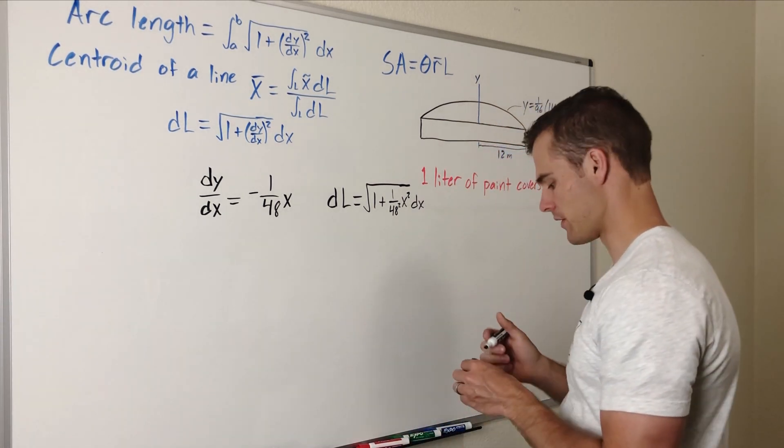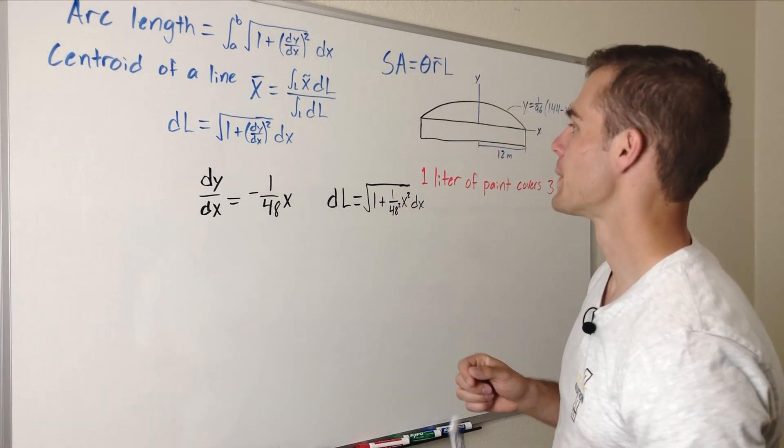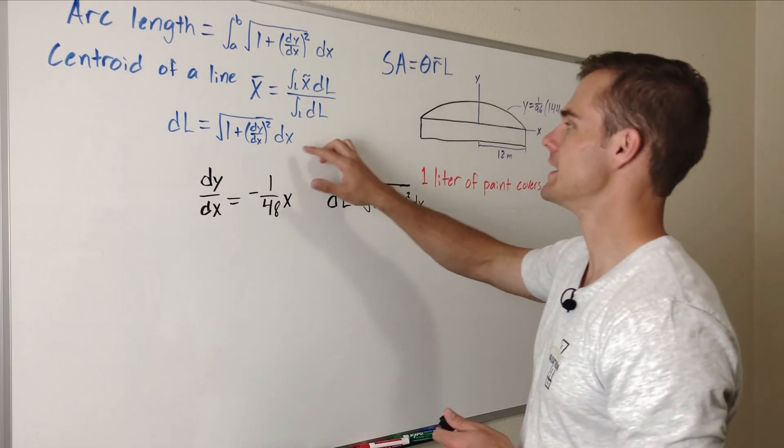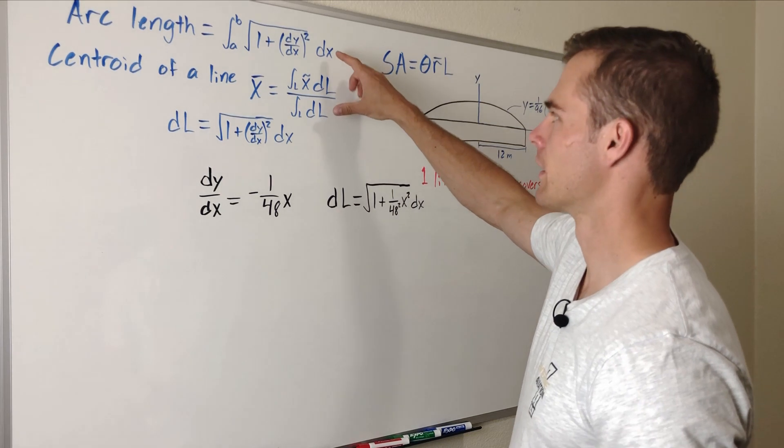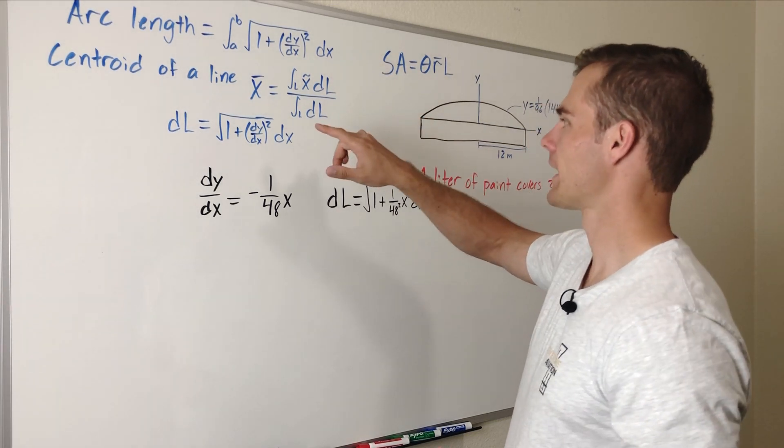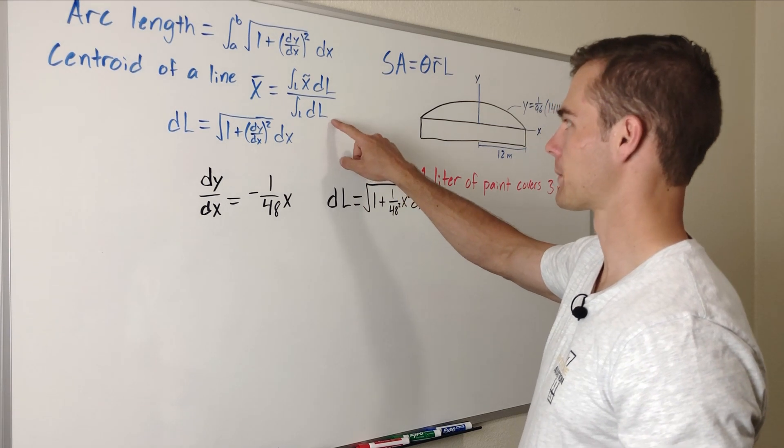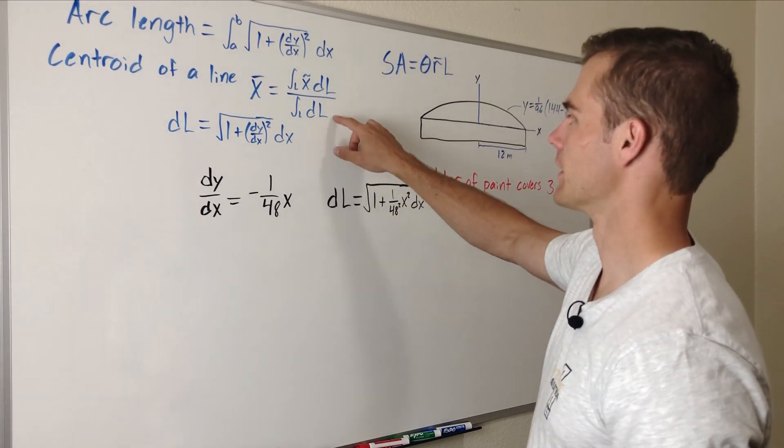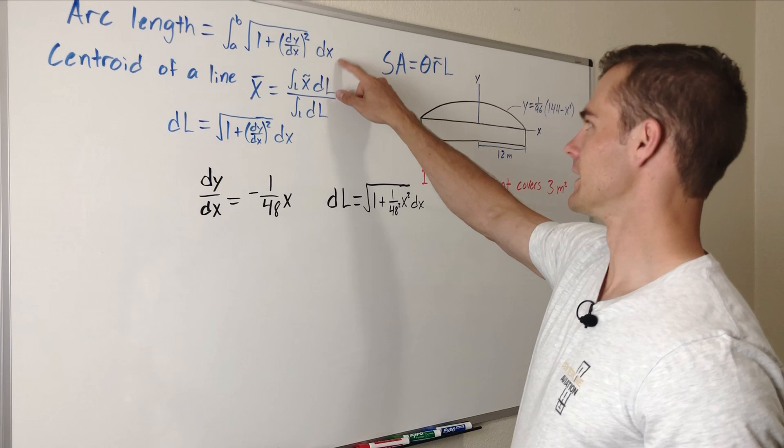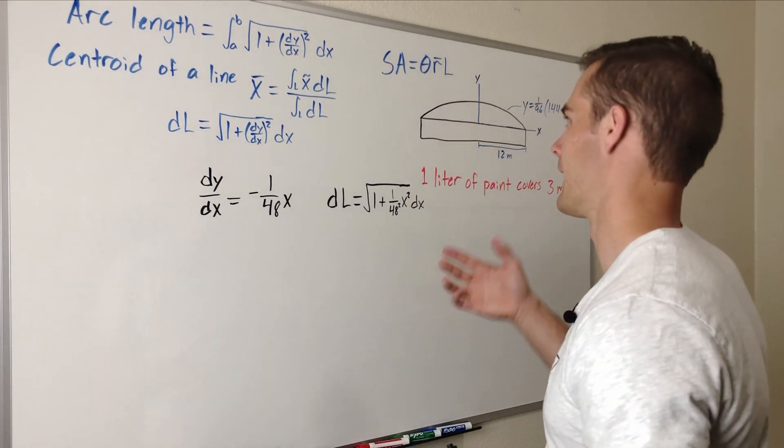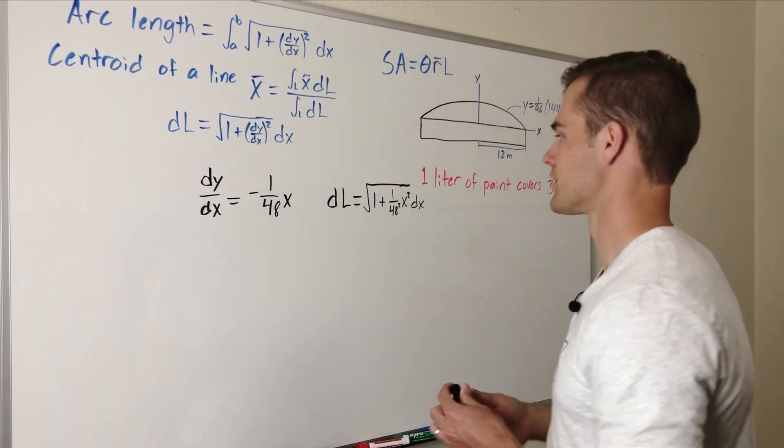Before we go any further, before we have to calculate too much, we can see here that dL and our arc length equation are very similar. In fact, if you take the integral of this like we have on the bottom of our x bar equation in the denominator, it is exactly the same thing as long as they're integrated over the same length and they are in this case.